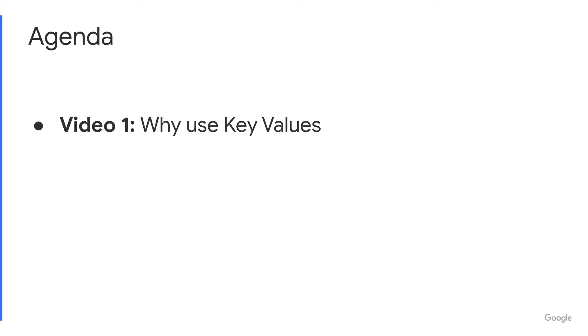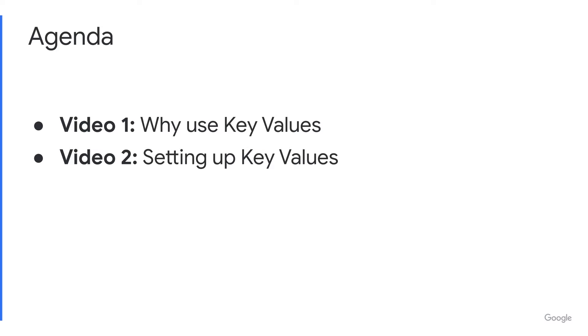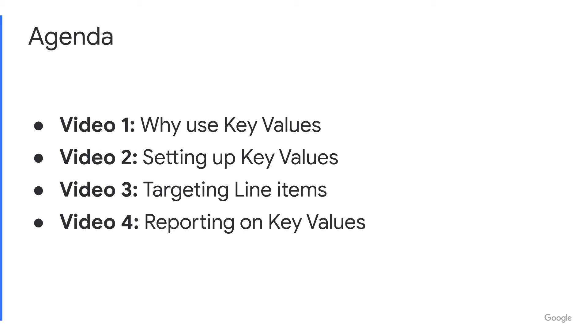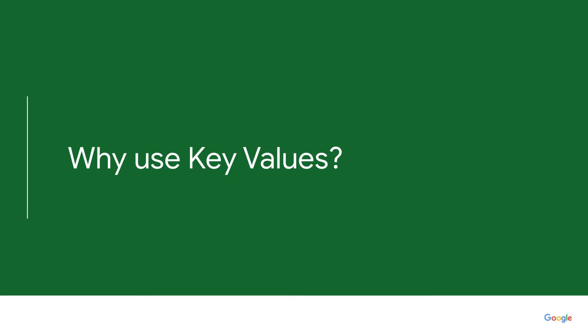Welcome to the Google Ad Manager Privacy and Audience Video Series. My name is Gracia O'Don. In this four-part series, we'll be learning about key values. In today's video, we'll start by sharing why to use key values, and then in the following videos, we'll look into the three main stages of managing key values: setting up key values, targeting line items to the key values you've created, and reporting on key values. Let's start by looking at why we should use key values.